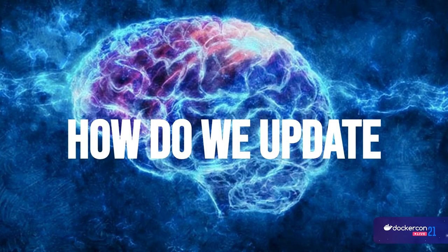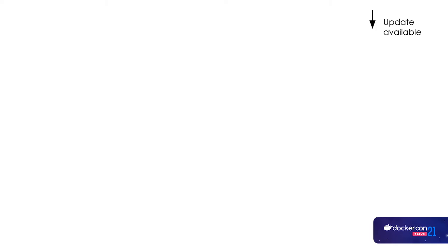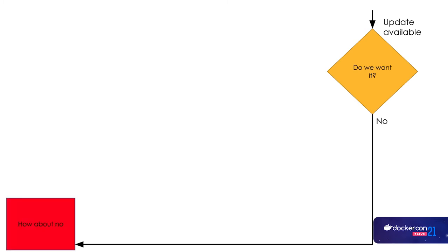To understand this, we need to look at the process of how we update anything in our organization. First, an update is available — we need to decide if we want it or not. Sometimes we don't want or need a small feature that's part of the version. If we decide we want it, it becomes more complicated. We need to understand if there are any risks — we need to make sure that upgrading this version won't be harmful to our company.